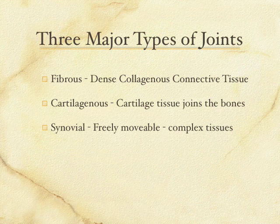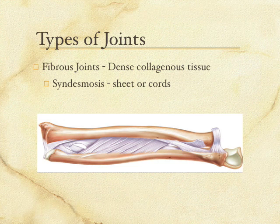So fibrous, cartilaginous, and synovial are the three classifications of joints. Within each of these there are subtypes. You need to know what those types are and be able to give an example of each. Let's go through each one and talk about the subtypes.